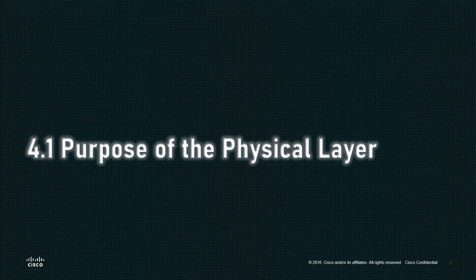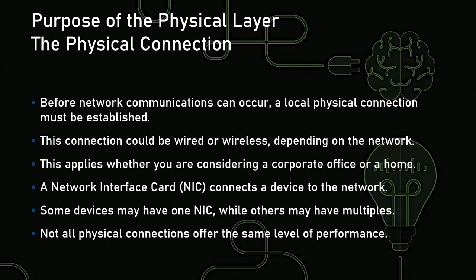Let's get started with 4.1, the purpose of the physical layer. Before any wireless communications can occur, before any physical connections can occur, before network connections can occur, we have to have a planning phase. But once that's done, we have to build upwards from that — we have to have a hierarchy. A local physical connection has to be first. You can't have a wireless system without a backbone. You can't have network communications without a physical media. This connection could be wired or wireless depending on the network, but it does have to have that backbone infrastructure. A network interface card connects the device to the network and allows translation of signals coming in or going to that device.